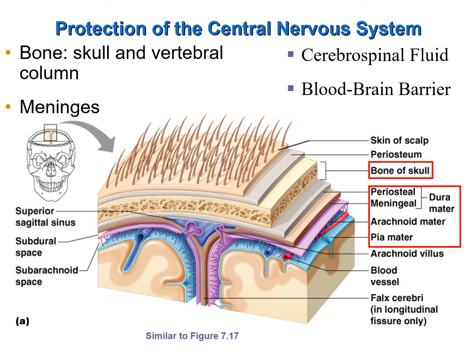Deep to the bone we have several layers of tissue or membranes called meninges. The dura mater is the thickest outermost meninge. Deep to that we have the arachnoid mater and then we have the pia mater. The arachnoid mater has little extensions that make contact with the pia mater and it resembles a spider's web. Arachnia means spider-like and that's where it gets its name. Most notably between the arachnoid mater and the pia mater is the subarachnoid space, which contains blood vessels and cerebrospinal fluid.